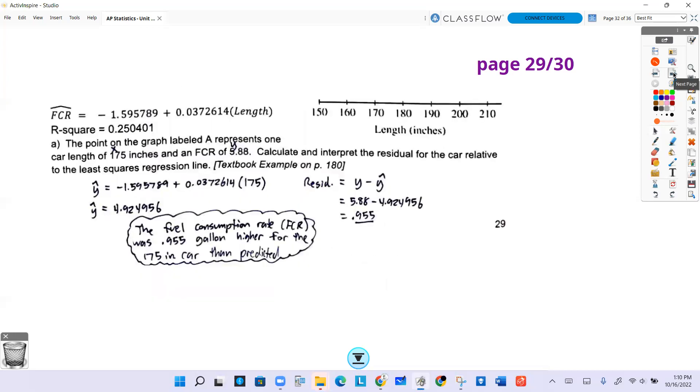Remember residual is Y minus Y hat, actual minus predicted. So we have the actual value 5.88. The predicted you can get by plugging in 175 into the equation and you get about 4.925. Subtracting that predicted from the actual gives a residual of about 0.955.